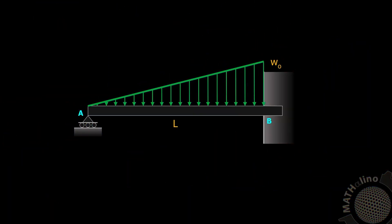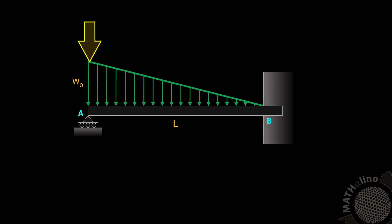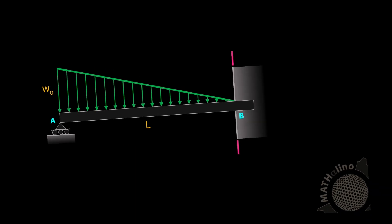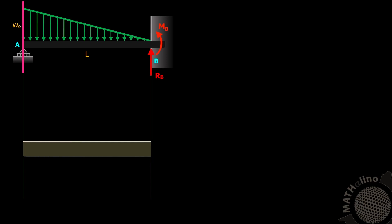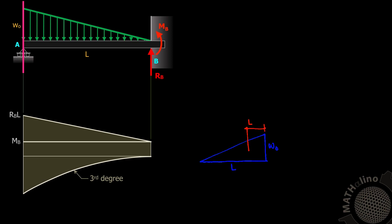Now for the second case, where the load is decreasing from W-naught at A to zero at B. We solve this in two ways: first by taking A as the moment center, and second by taking B as the moment center. Taking point A as moment center, RB and MB are involved. The diagram for MB is uniformly distributed with magnitude MB. The moment due to RB is a triangle with magnitude RB times L. For the triangular load, the diagram is a third-degree spandrel with magnitude negative W-naught L squared over 6.